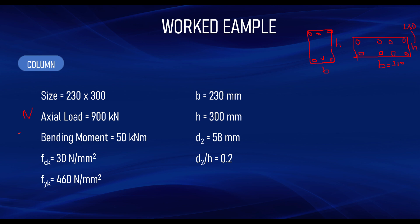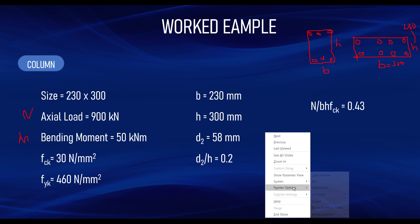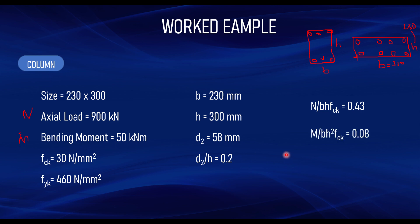From the column data, N is 900 kN and the bending moment is 50 kNm. We can determine N over bhfck: that is 900 divided by b × h × fck. Similarly we determine M over bh²fck. The reason we computed d2/h is to select the appropriate design chart — the charts range from 0.05, 0.1, 0.15, 0.2, and 0.25. I will leave a link in the description where you can download the charts.